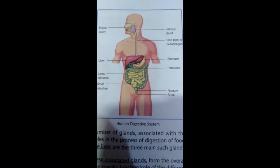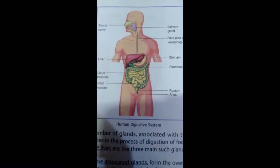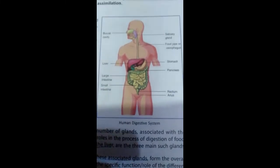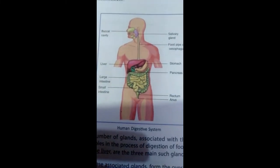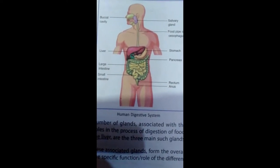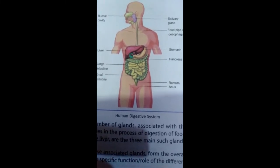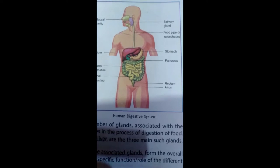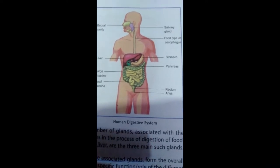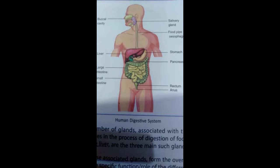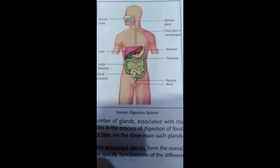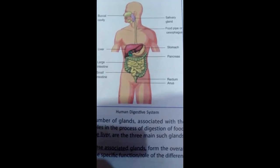The E part: the first question is to draw the diagram of the human digestive system. Look at this diagram - you have to draw it in your homework copy. Previously you drew this diagram in your notes, but now you have to draw it again in your homework copy. Draw the human digestive system as I am showing you - you can see the diagram clearly.